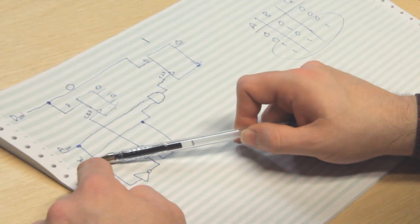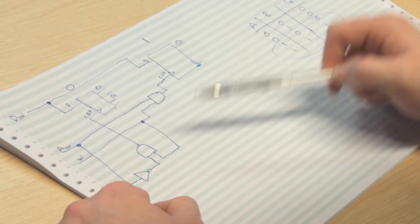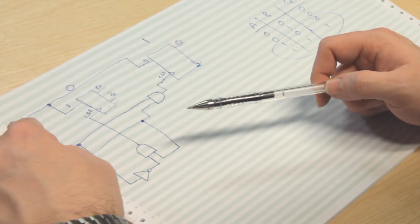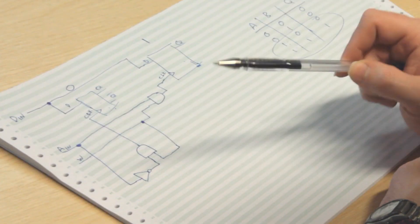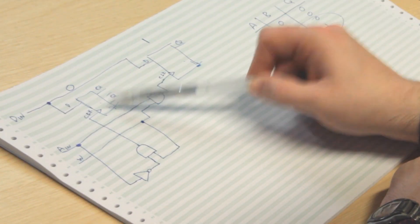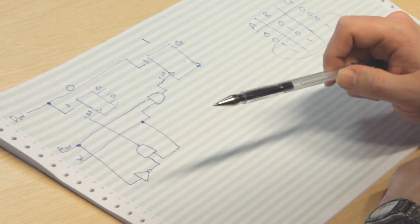And so now what we've got set up is that we've got three inputs. W, which says when we want to write something to our flip-flops. DIN, which contains the value we want to write. And AIN, which tells us whether we want to write to flip-flop zero or flip-flop one. Depending on the value of zero or one in AIN, we either store the value in that one or we store it in that one.